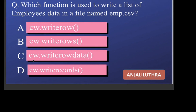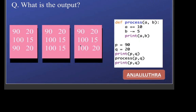Which function is used to write a list of employees' data in a CSV file named m.csv? You have a list of employees — not a single employee — so you have to use writerows. In CSV file writing, there are two functions: writerow for a single list and writerows for multiple lists. Since you have a list of employees, each employee has their own list, giving you a list of lists — so option b, writerows, is the correct answer.